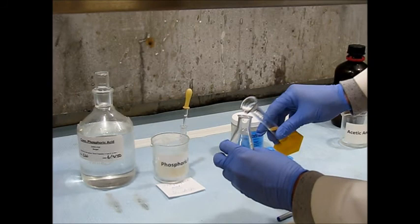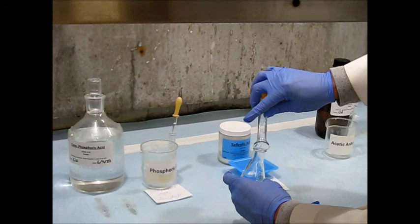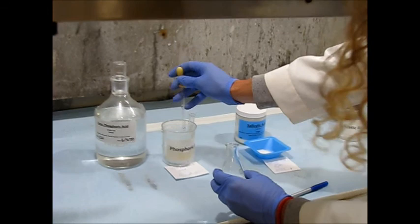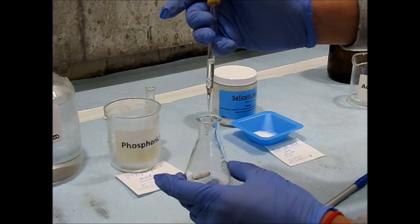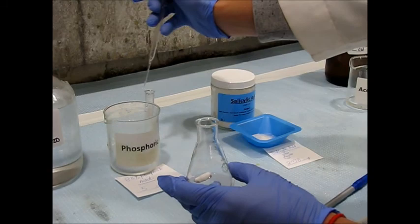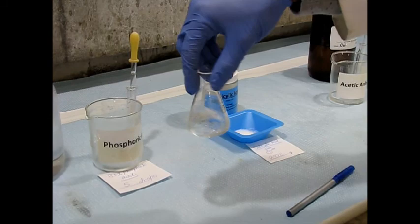So this is our acetic anhydride. And we'll add five drops of our phosphoric acid. Go ahead and swirl it up so it starts mixing.